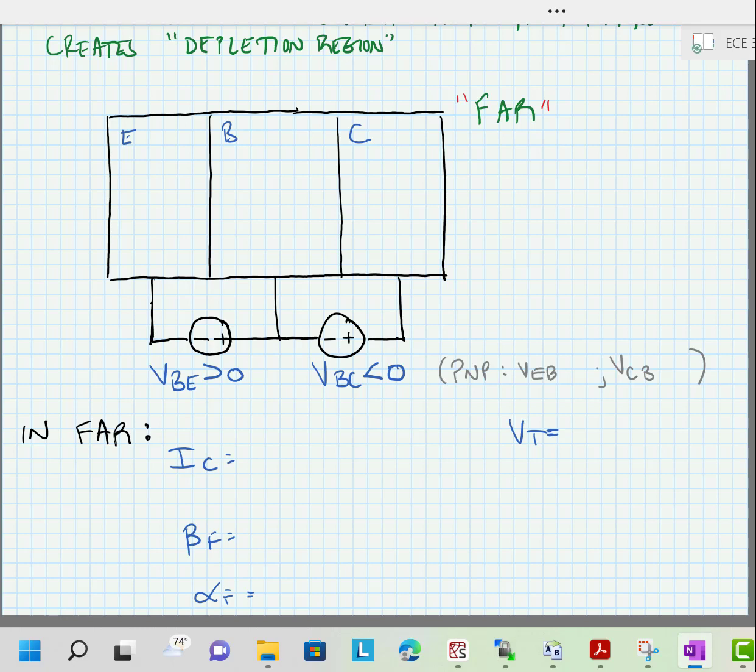And if we were looking at a PNP, we would indeed see that the emitter to base junction would be forward biased and the collector to base junction would be reverse biased, just reversing the subscripts for the PNP.